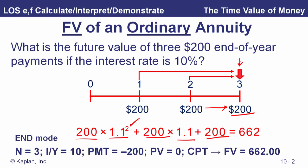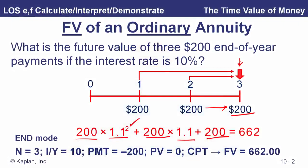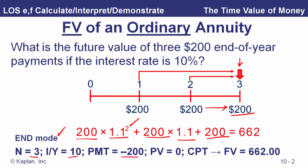Now let's take a look at the calculator solution. We put the calculator in end mode, and that's telling the calculator that each of these deposits comes at the end of the year — one deposit at the end of year one, one at the end of year two, and one at the end of year three. So we've got N equals three. The interest rate is 10 percent. Our payment we put in is minus $200. Our present value is zero — there is zero in the account today at time zero. We compute the future value, and in end mode this future value is at time three, three periods from now.